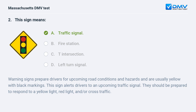Warning signs prepare drivers for upcoming road conditions and hazards and are usually yellow with black markings. This sign alerts drivers to an upcoming traffic signal. They should be prepared to respond to a yellow light, red light, and/or cross traffic.